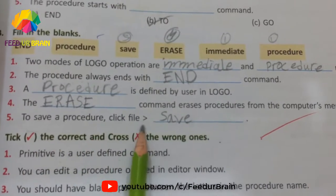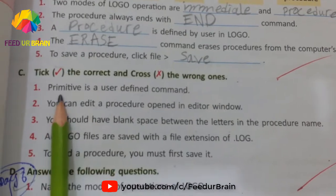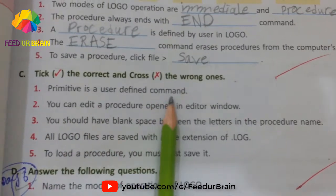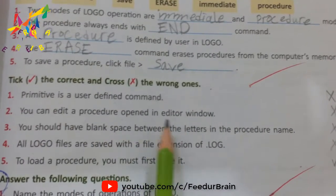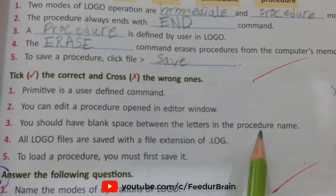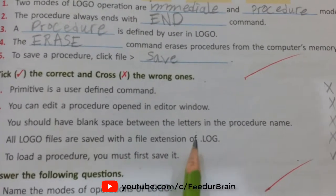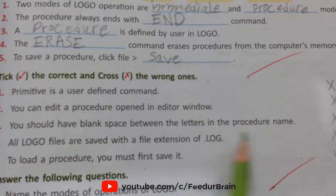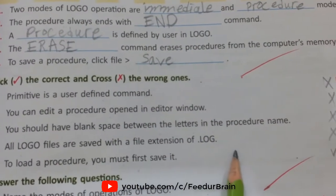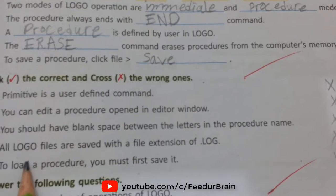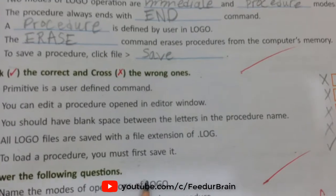To save a procedure, click File, Save. Here is true/false: Primitive is a user-defined program - false. You can edit a procedure opened in editor window - true. You should have blank space between the letters in procedure name - false. All LOGO files are saved with file extension .LOG - false. To load a procedure you must first save it - true.